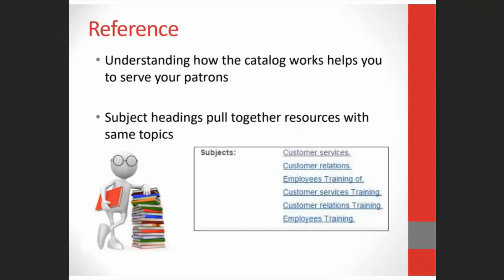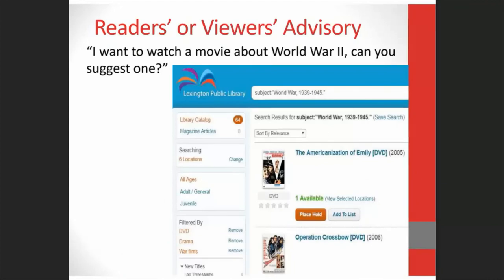Now we're going to look at how the catalog helps you, the library staff. The first way the catalog helps you is with reference. Our former reference supervisor at the State Library always said that understanding how the catalog worked really helped her to better serve her patrons, especially when she discovered subject headings. Searching subject headings along with keywords helps you to find all the resources on the same subjects. Another way your catalog can help you is with readers' or viewers' advisory. Your catalog can also be a great source of information for readers' and viewers' advisory, and you also have the information about what you have in your collection and where it is right there in one spot.